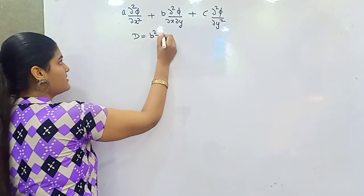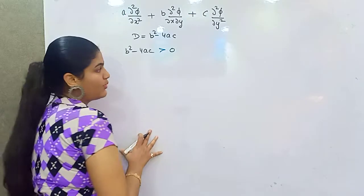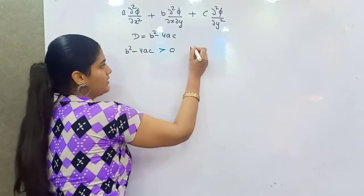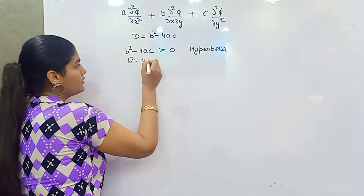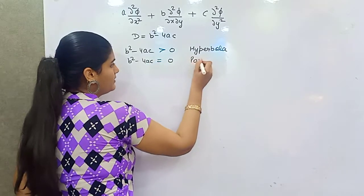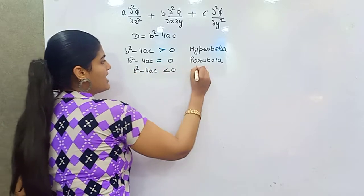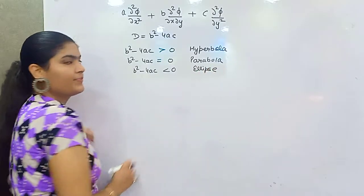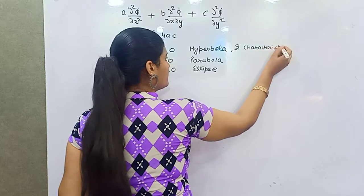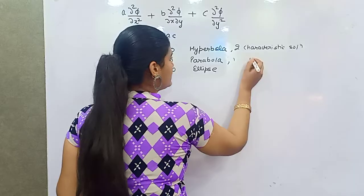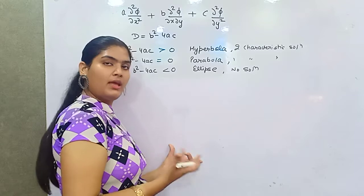To classify the equation, find the discriminant b squared minus 4AC. If it is a positive number, the equation is a hyperbola. If it equals zero, it is a parabola. If it is less than zero, it is an ellipse. These correspond to two characteristic solutions, one characteristic solution, and no solution respectively — just as in the general quadratic formula.